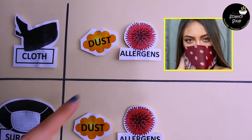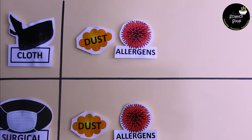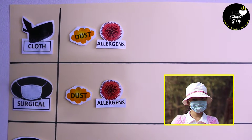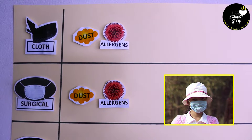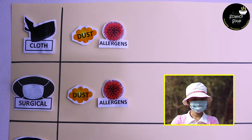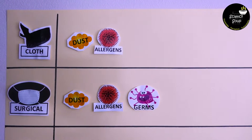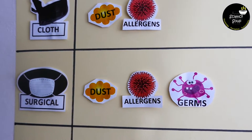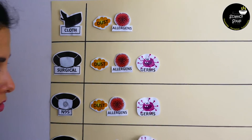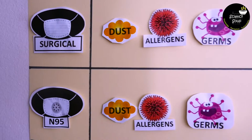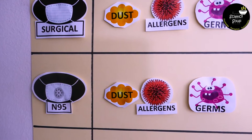Cloth masks will only protect you from dust and allergens. After cloth masks come the surgical masks — the ones used by surgeons. These masks can protect you from some airborne infections along with some dust and allergens. In fact, all the following masks can also protect you from germs. Surgical masks are quite cheap, but they definitely do not protect you from PM2.5 and PM10.